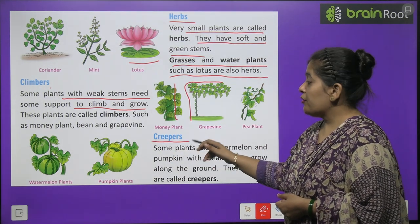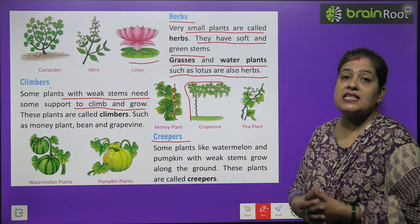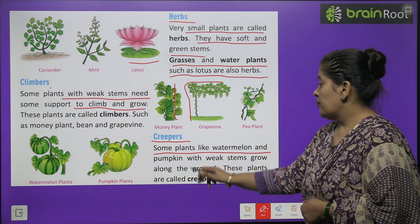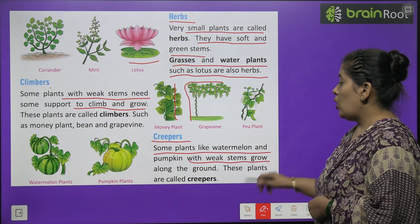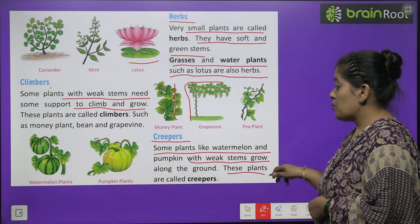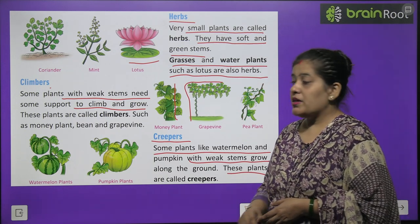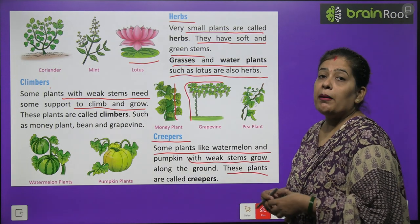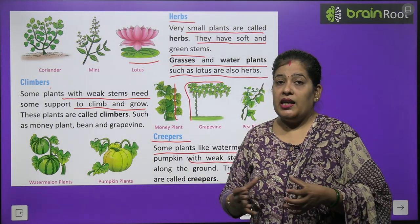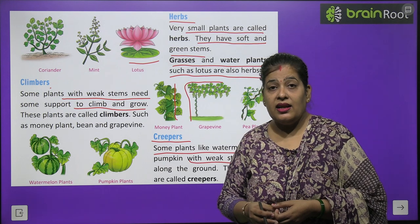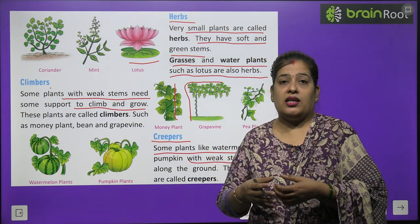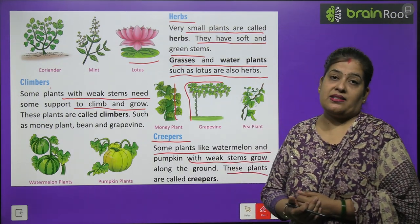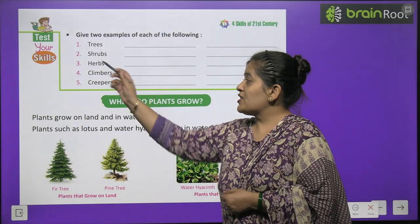Now we will read about creepers. Some plants like watermelon and pumpkin with weak stems grow along the ground — these plants are called creepers. The vines of watermelon and pumpkin are very weak; they bear heavy fruits and cannot stand upright, so they spread along the ground. We call them creepers.